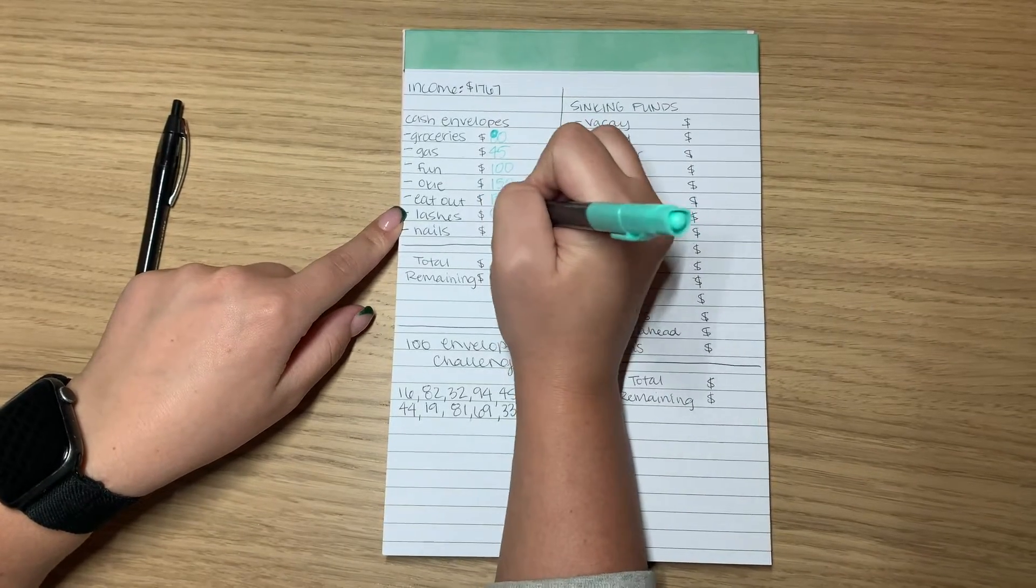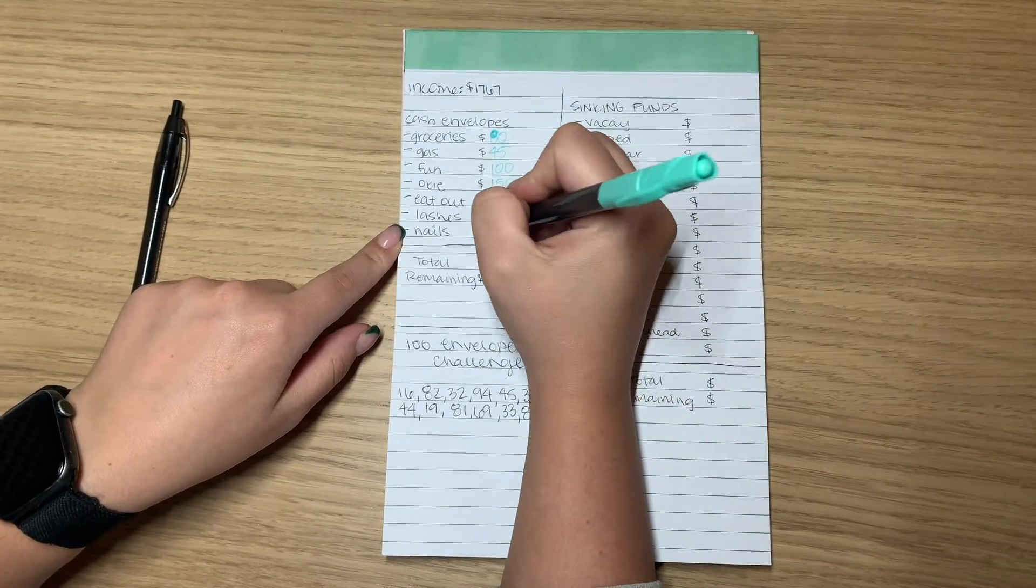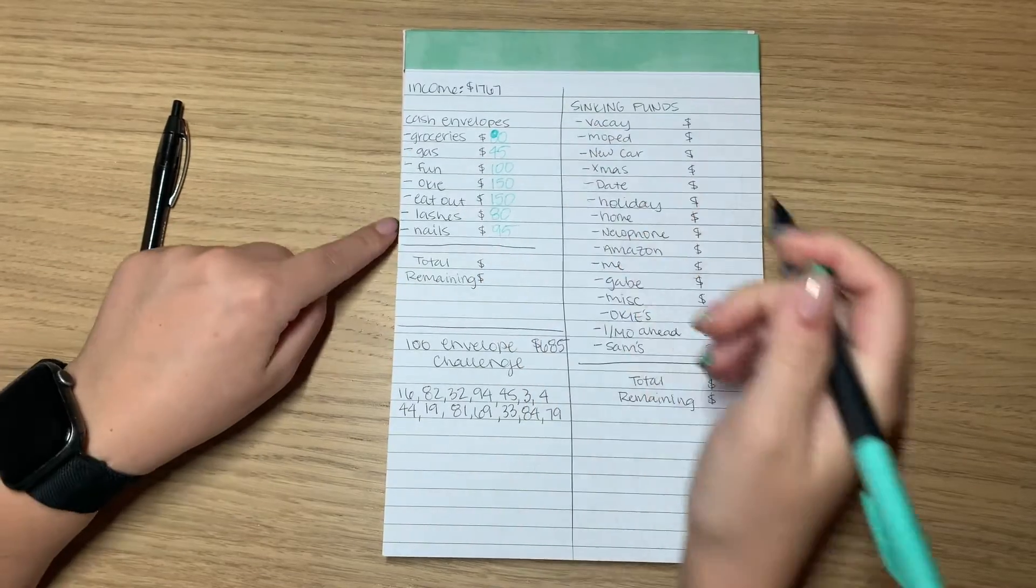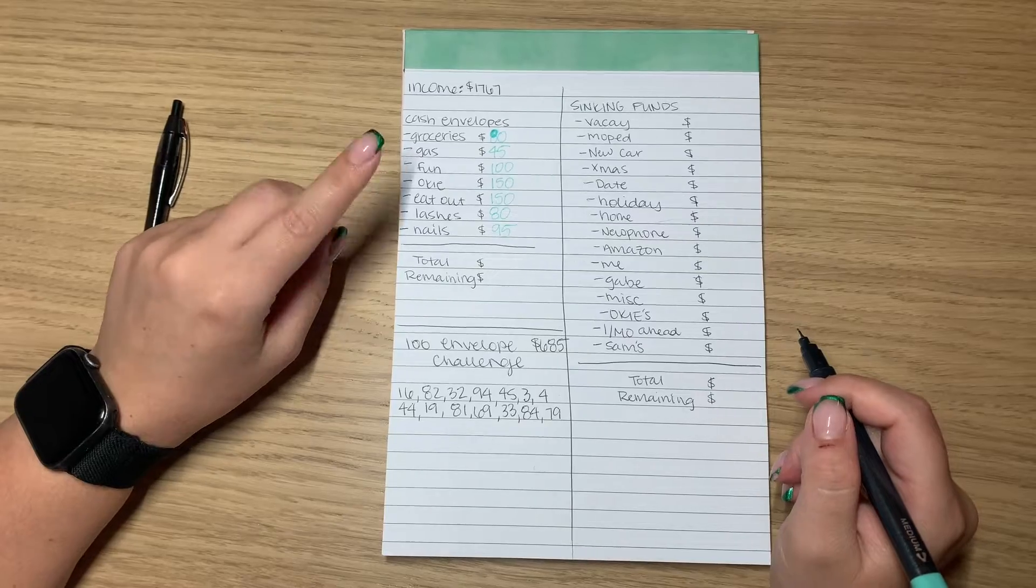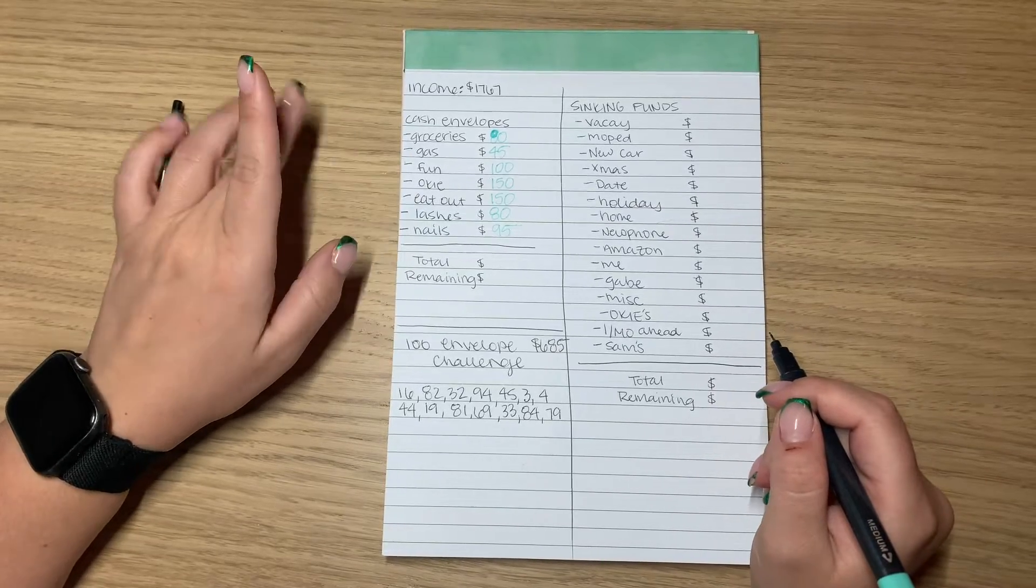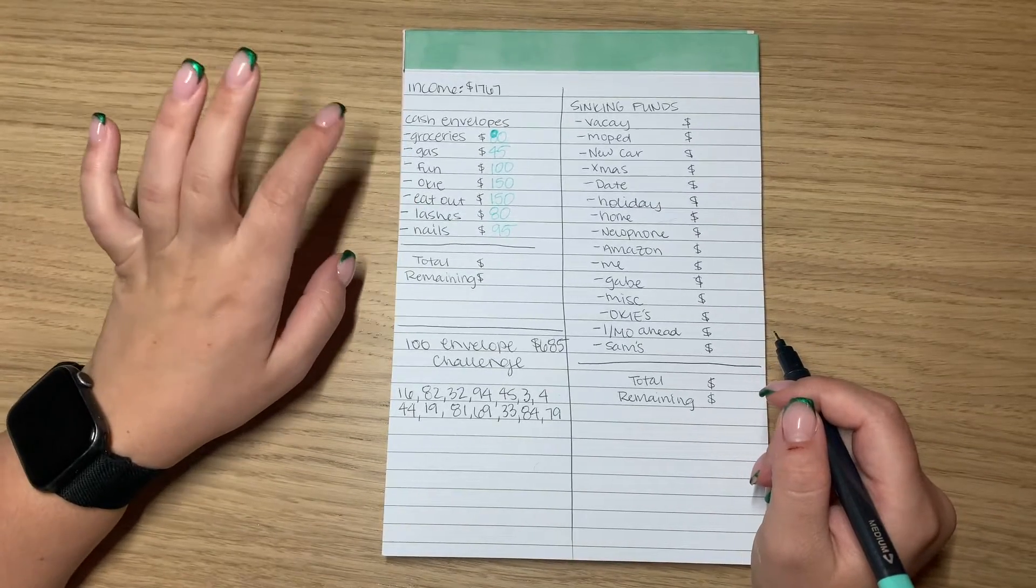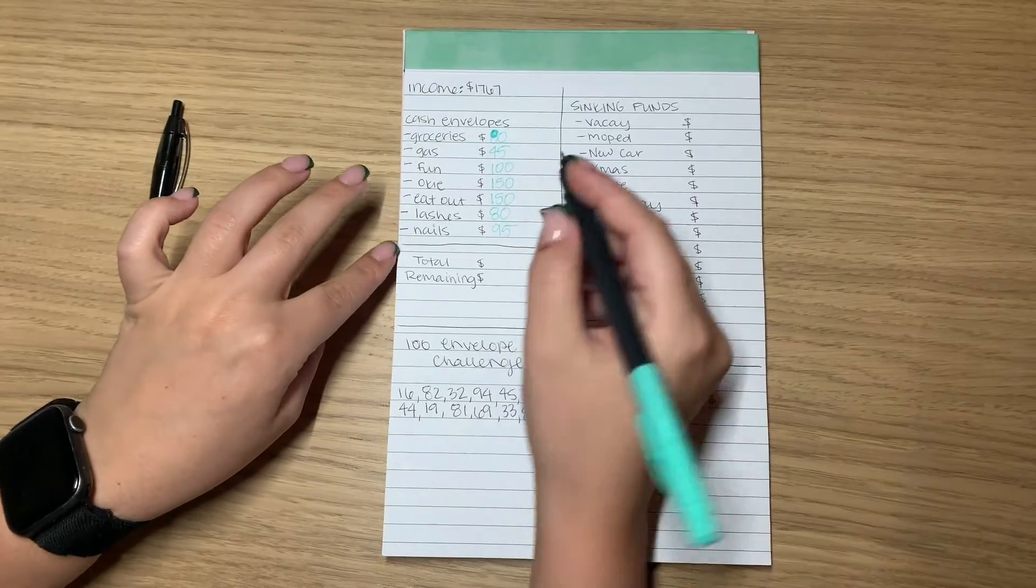Lashes is $80. Nails is $95. I decided to split these up because I was having trouble not having change for one.